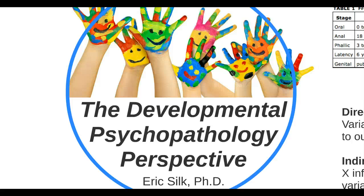Hi class. This lecture is on the developmental perspective of psychopathology. At this point, most of you should have taken a developmental psychology course, so a lot of this is kind of review. This chapter highlights developmental psychology and gives you a brief introduction of how it's related to psychopathology. What I want you to conceptualize is: why do things go wrong in a child? Why do things go right as well?